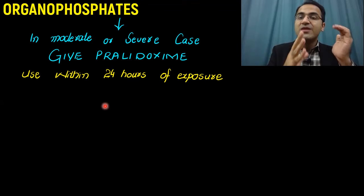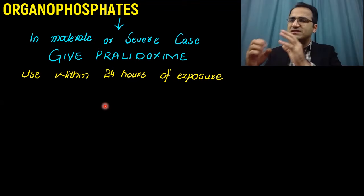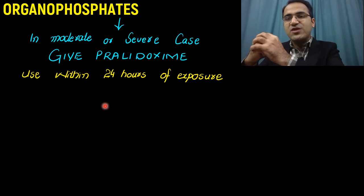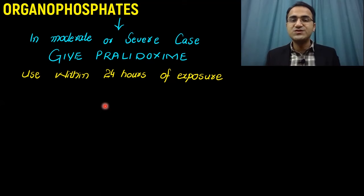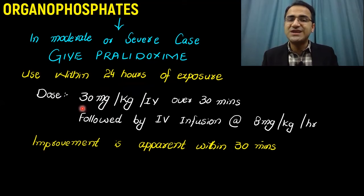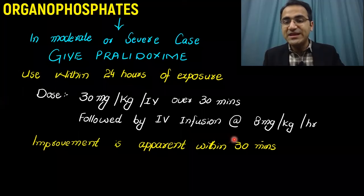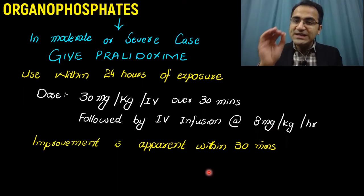But after 24 hours, if you give pralidoxime, it would be ineffective because the organophosphates would have irreversibly bound acetylcholine esterase. So you give pralidoxime within 24 hours of exposure. The dose is 30 mg per kg IV over 30 minutes, followed by an IV infusion at the rate of 8 mg per kg per hour. Improvement is apparent within 30 minutes.